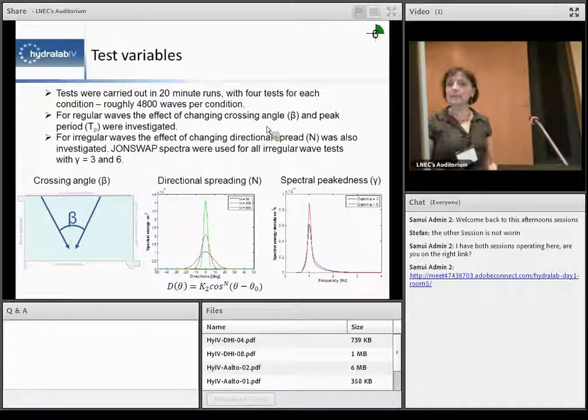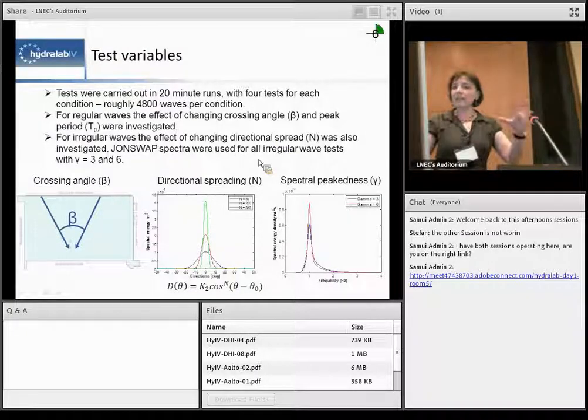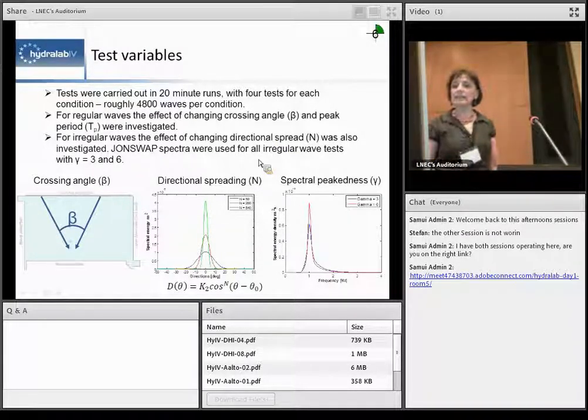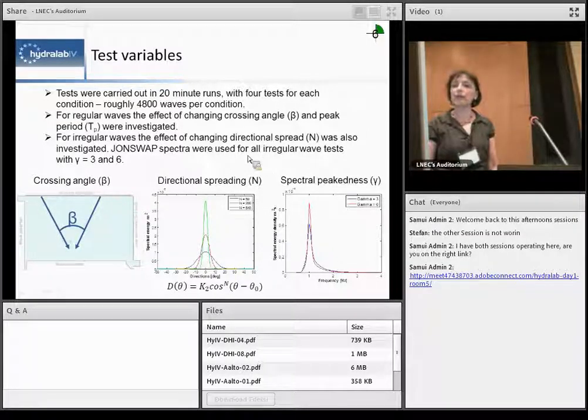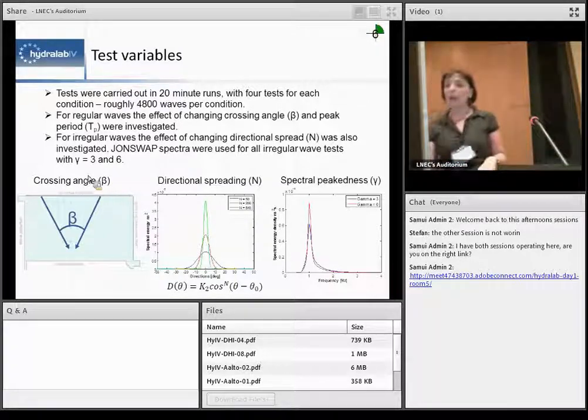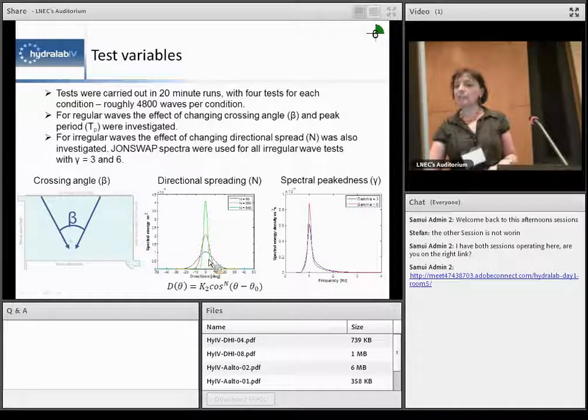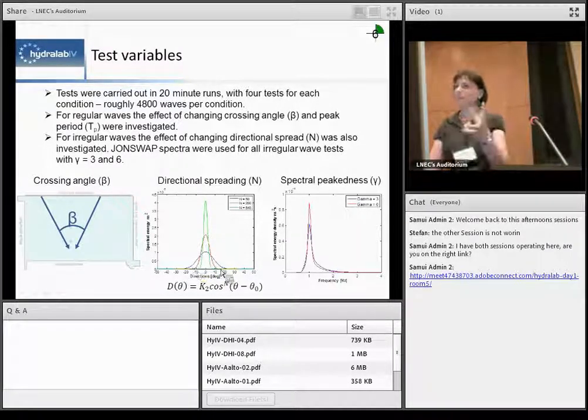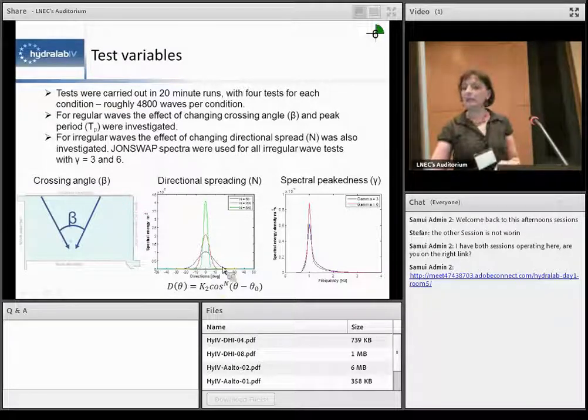And we have bi-directional seas, two different sea states. We used two different JONSWAP spectra for frequency distribution, gamma 3 and gamma 6. So one was more broad and gamma 6 would be more narrow. And then we used different directional spread from 50 which is about 20 degrees which is quite normal out in the sea. And then the narrow banded about 200, 840 that kind of gives the directional spread about seven or so degrees. It's quite narrow.